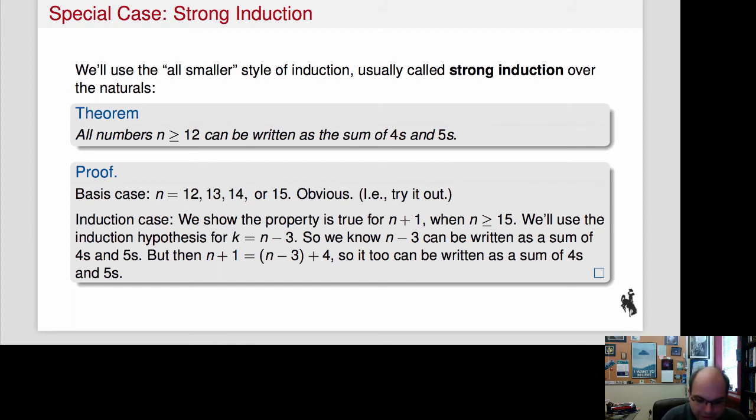Here's an example of actually using strong induction or complete induction. We're going to prove that all numbers that are greater or equal to 12 can be written as the sums of 4s and 5s. So here's my basis case. I'm actually choosing n equals 12, 13, 14, or 15. So that's 4 base cases. This is unusual.